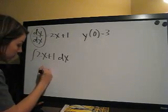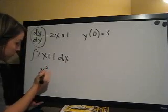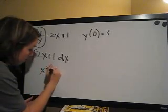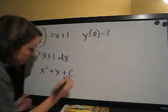The integral of this is x squared, 2 over 2 is 1, and then plus x plus c.